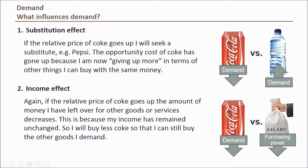An easy way to remember each effect is to think of the name. The substitution effect relates to substituting the more expensive good with a less expensive alternative, while the income effect relates to how a rise in price impacts how much someone can buy with the same income. Don't forget both effects apply to either an increase or a decrease in price. For now, all you need to know is that there are two effects impacting quantity demanded when price changes.